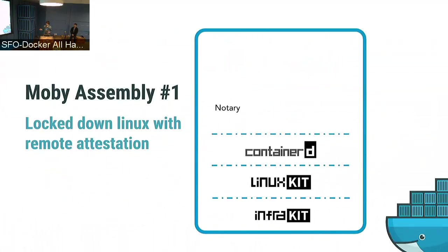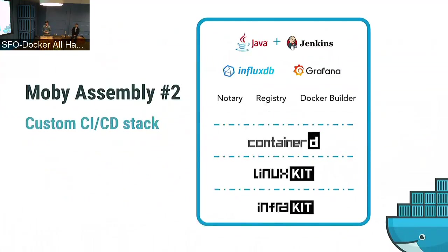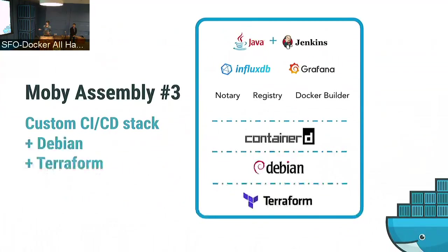That's a basic assembly — just LinuxKit and ContainerD. Here's a more complex assembly: you could do the same and on top of that install a Docker builder, a registry, and have a whole CI/CD stack with Jenkins, InfluxDB, and Grafana. And then maybe you think, I don't want to use InfraKit or LinuxKit because I have other components I know better — could I swap to Terraform and Debian? That's the kind of innovation we want to encourage: mixing and matching components to your liking without being tied to Docker.